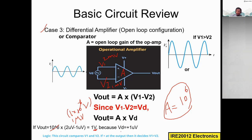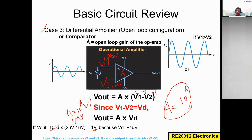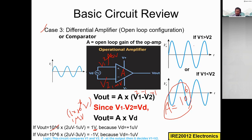To recap: I apply two microvolts to the positive terminal and one microvolt to the negative terminal. According to the formula, two minus one gives plus one, so the output is amplified with no phase shift — same phase — because V1 is greater than V2. Now let's see another case where V1 is less than V2.